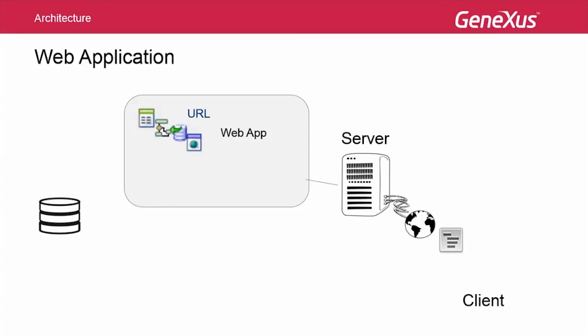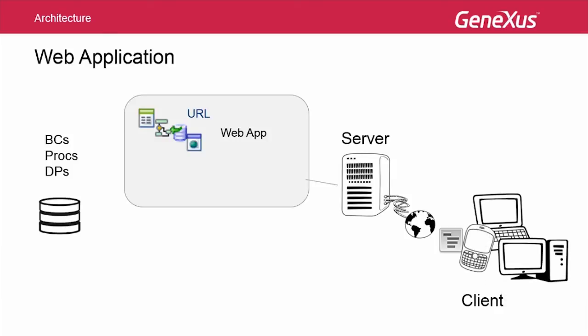Moving on with the web application in particular: if we want some of the application's objects which process and return structured data — these are transactions, like business components, procedures, and data providers — to be consumed by other programs, not necessarily implemented with GeneXus, through the internet, from a notebook, a PC, or a smart device, a convenient option is to exhibit them as REST web services, so that they are APIs of the application, constituting a layer of services.